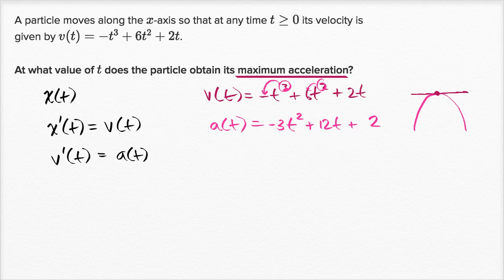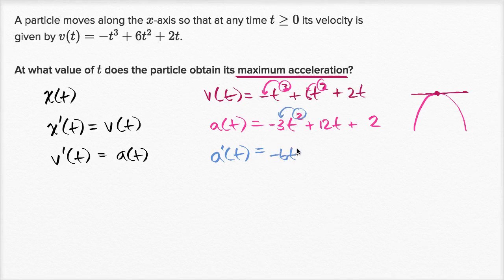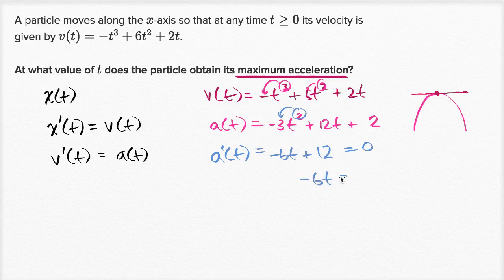The first derivative — the rate of change of acceleration — is going to be equal to -6t + 12. When does this equal zero? If we subtract 12 from both sides, we get -6t = -12. Dividing both sides by -6, we get t = 2.